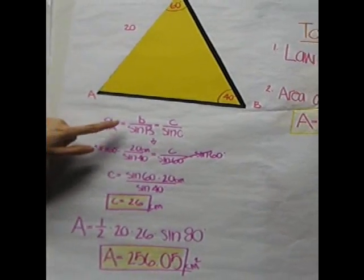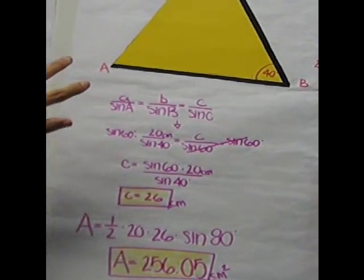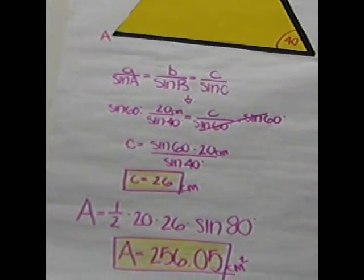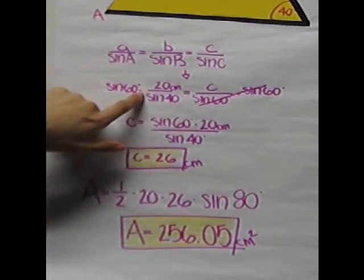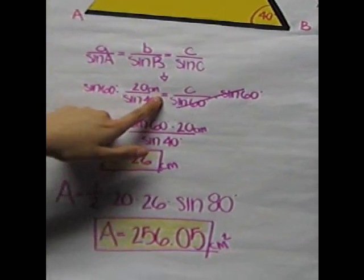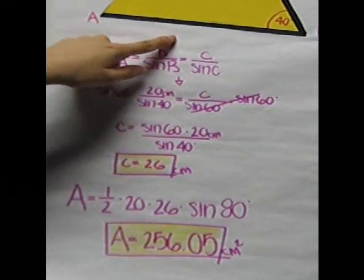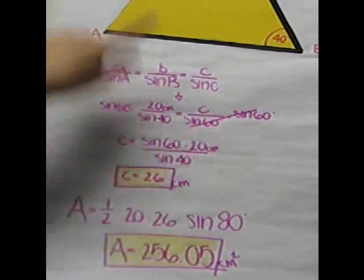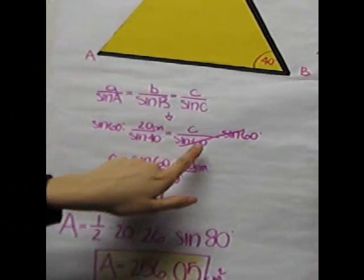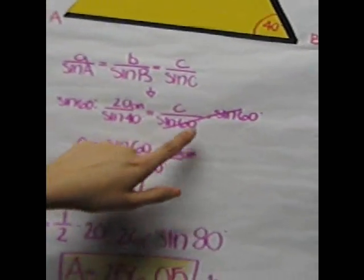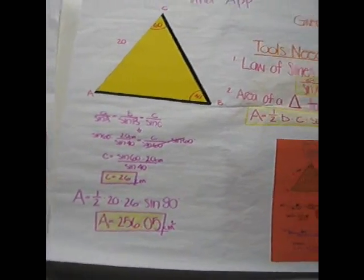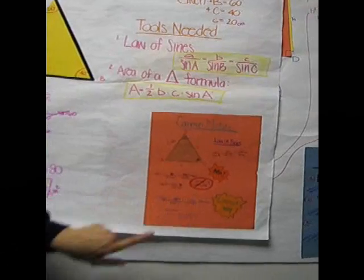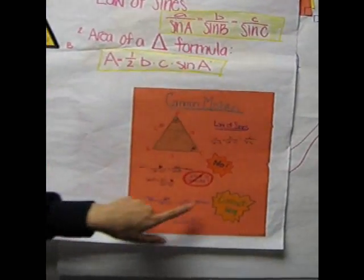And what you do first is since you have two given sides and a given angle, you're going to put 20 centimeters over sine 40 equals c over sine of 60. And you divide by the denominator on both sides, and then you cancel them out. And a common mistake from that is when usually people divide by the numerator instead of using the denominator, as you can see here.